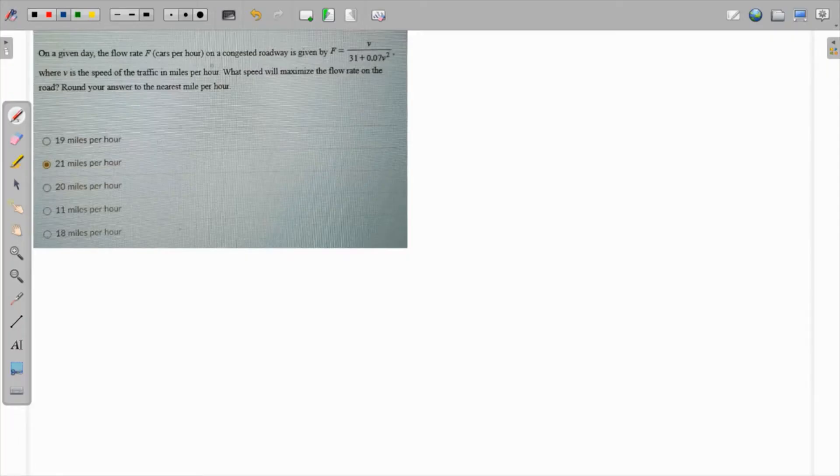On a given day, the flow rate of cars per hour on a congested roadway is given by a particular equation. We use the speed of the traffic in miles per hour. What speed will maximize the flow rate of the road? We need to find the maximum value.